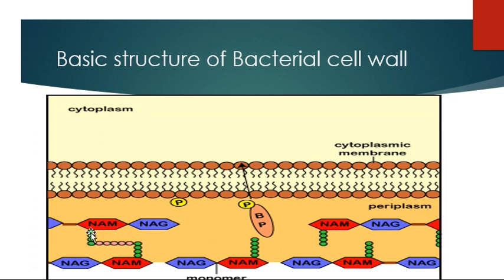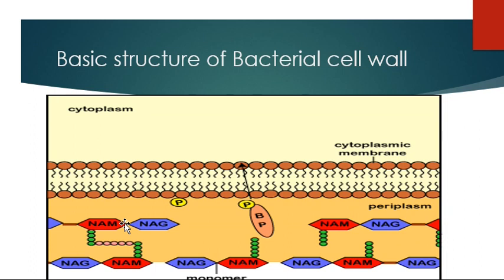This peptidoglycan is the basic component of the cell wall. This chain is composed of amino acids and this chain is composed of glucose — that's why we call it peptidoglycan. One peptidoglycan unit connects with another through transpeptidase enzyme. This transpeptidation reaction connects NAM to NAM and also NAM to NAG. This peptide and that peptide connect with each other through the enzymatic reaction called transpeptidation.